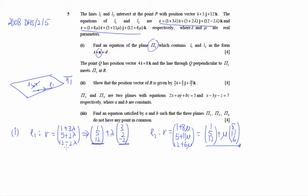What we need now is the normal to plane π1. We are going to take the two direction vectors and cross them. So we take the direction of L1 cross the direction of L2.